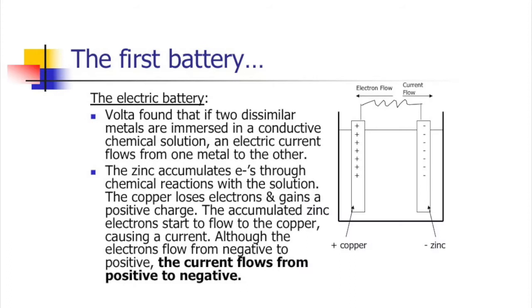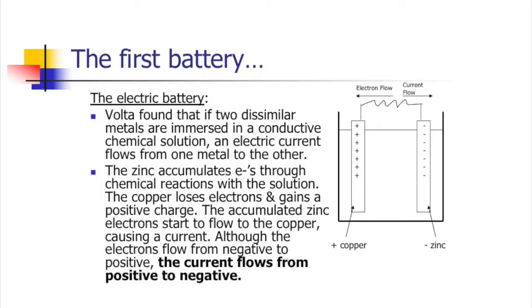His battery was an acid bath with two pieces of metal: copper and zinc. If you place copper in acid it would start to lose electrons through a chemical reaction, giving it a positive charge. Zinc placed in an acid bath would start gaining electrons, giving it a negative charge. So you have two pieces of metal with constantly different charges.